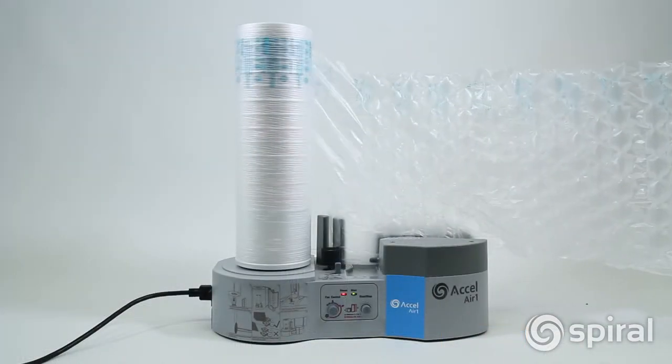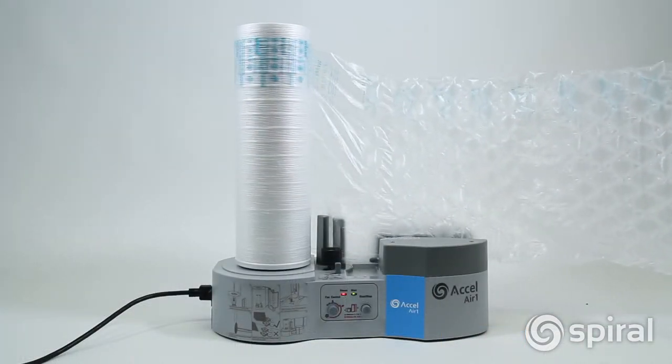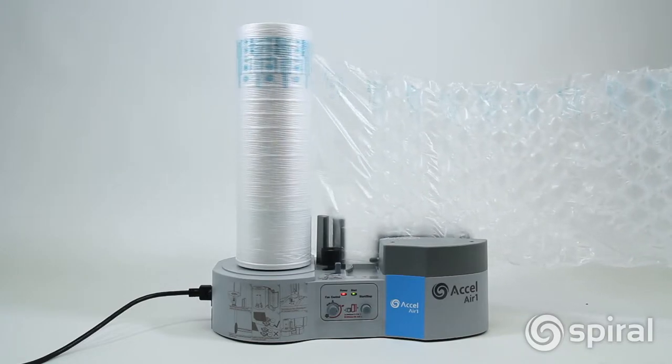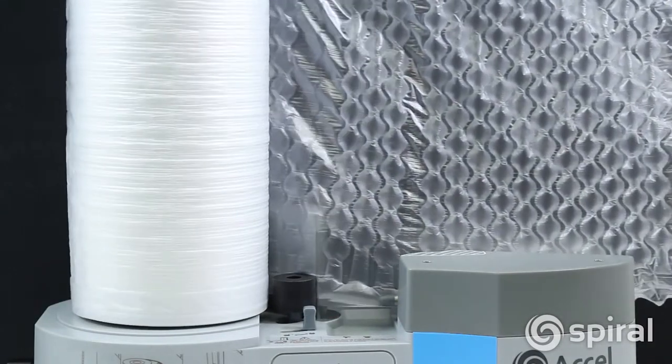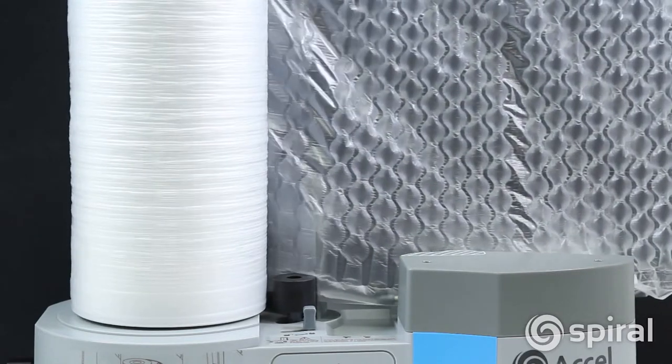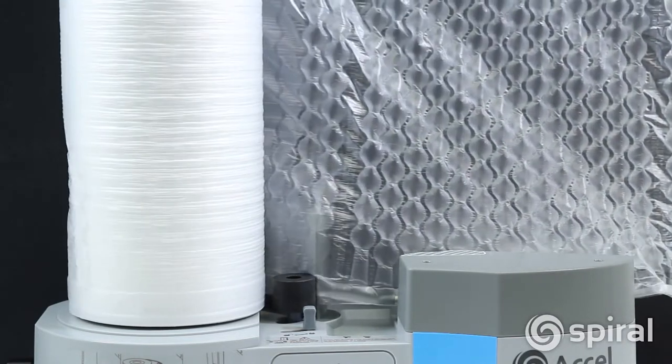The bubble pad film can be used for both void fill and as a protective wrap film. Each roll of bubble pad has 1,350 pieces that are fifteen and three-quarter inches by eleven and a half inches.